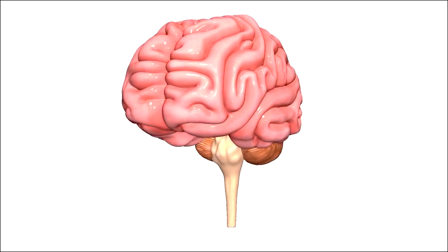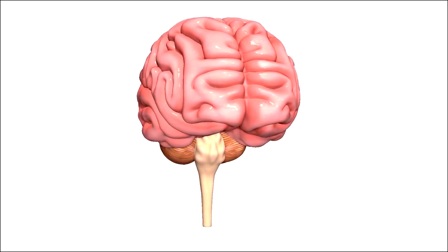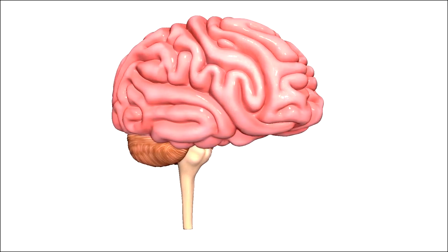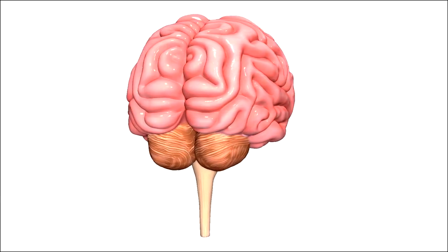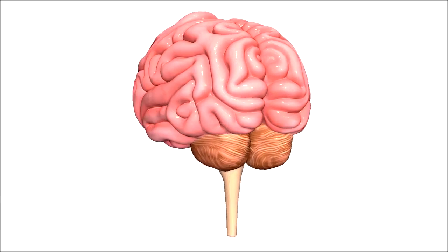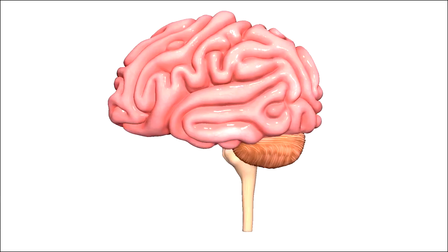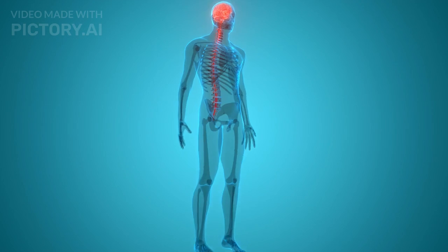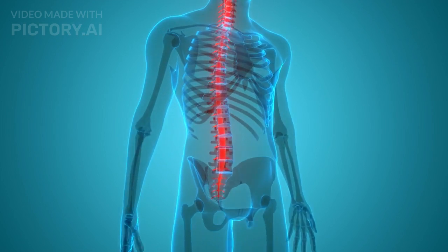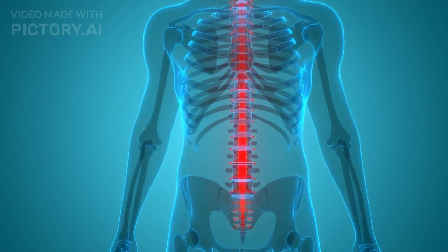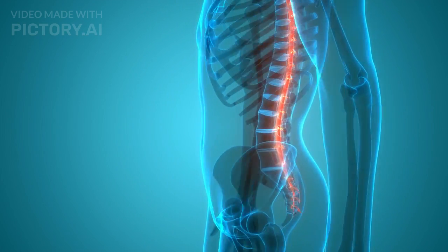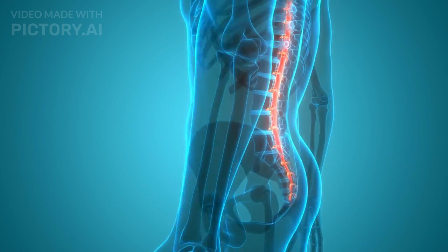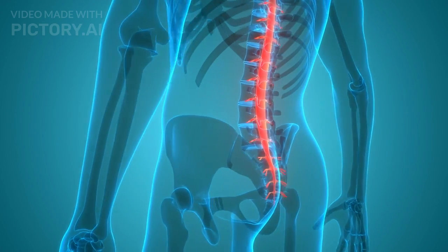An adult brain weighs between 1 kg to 1.5 kg and contains up to 100 billion neurons. Together with the spinal cord, the brain forms the central nervous system, the command center for thoughts and body movements.